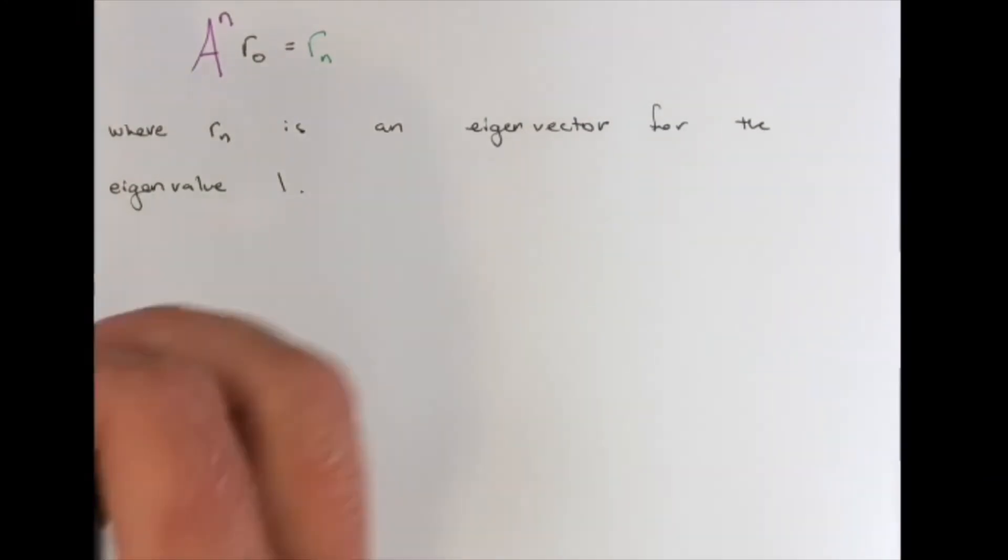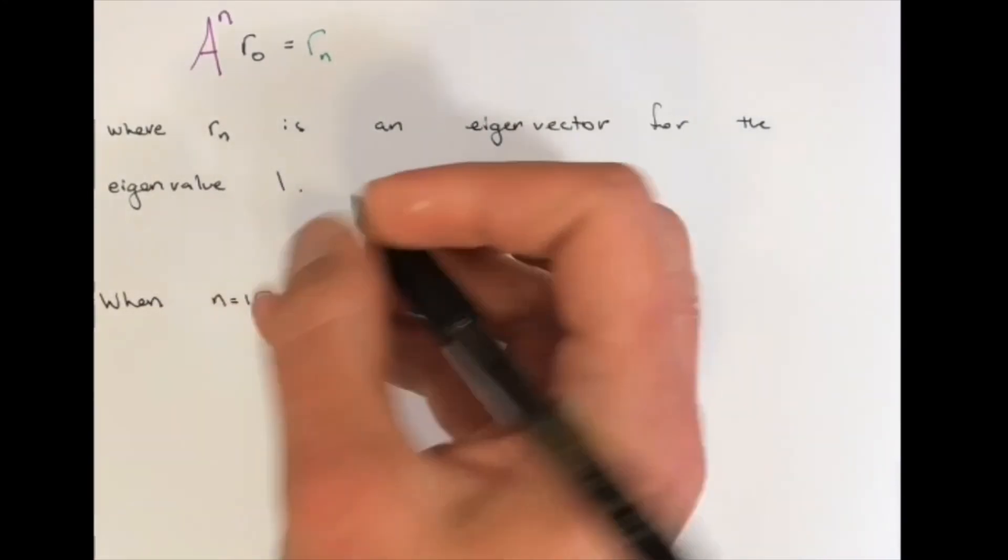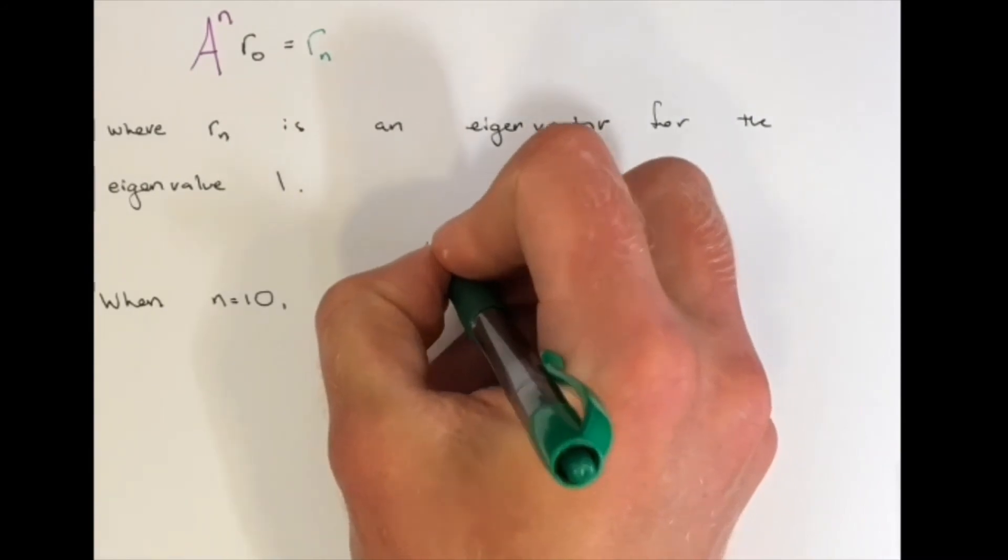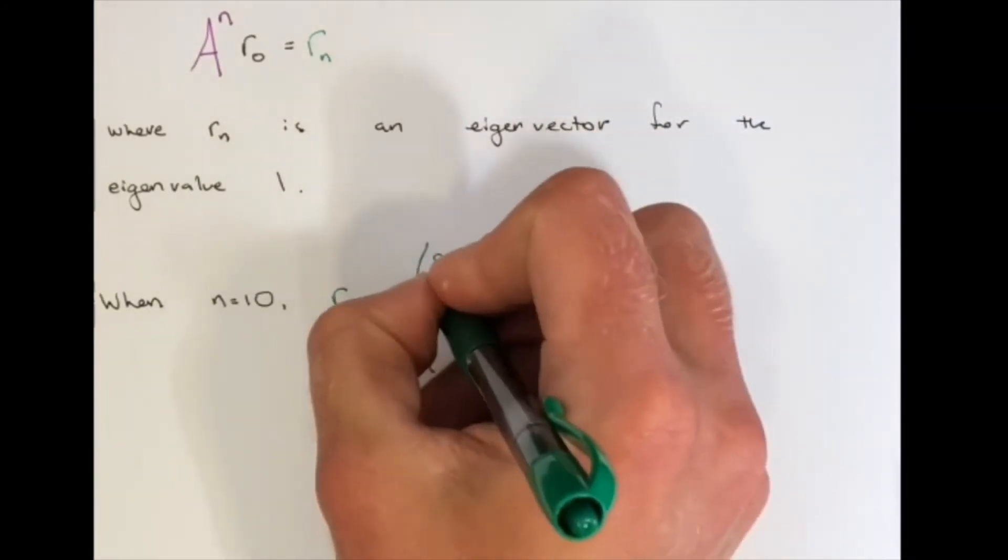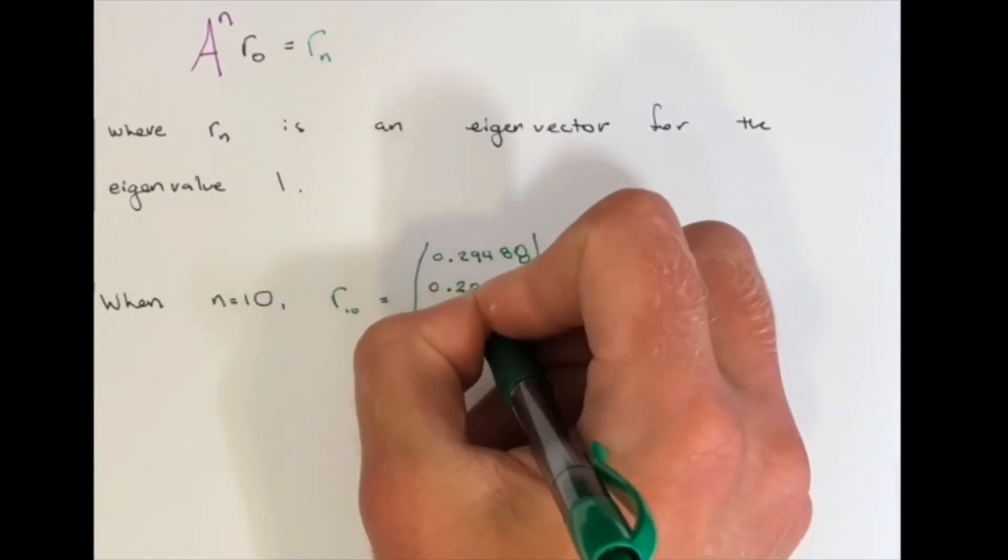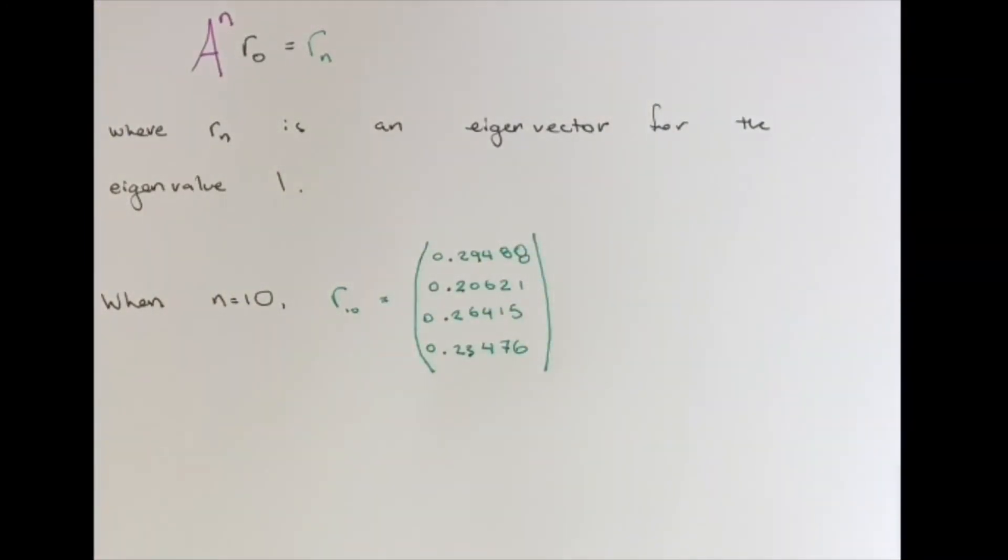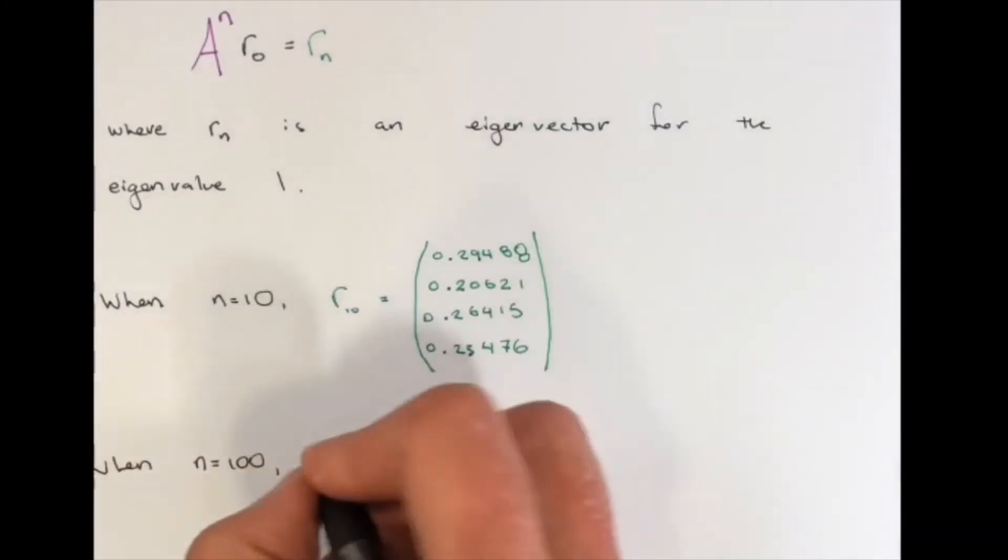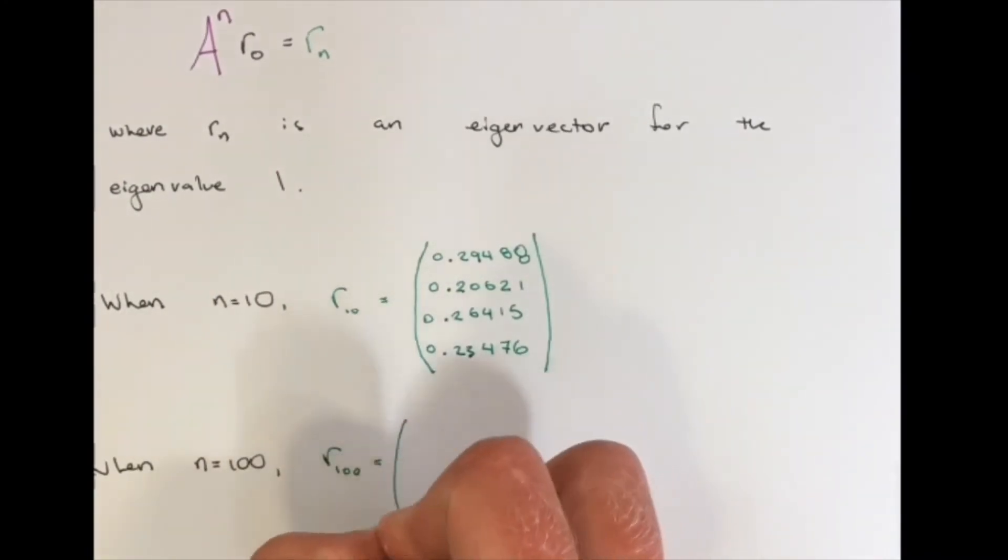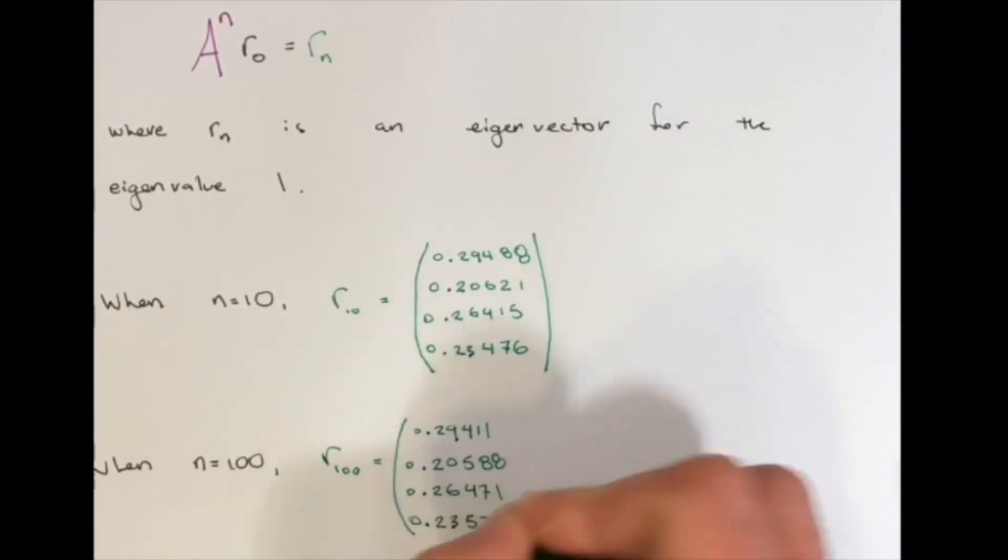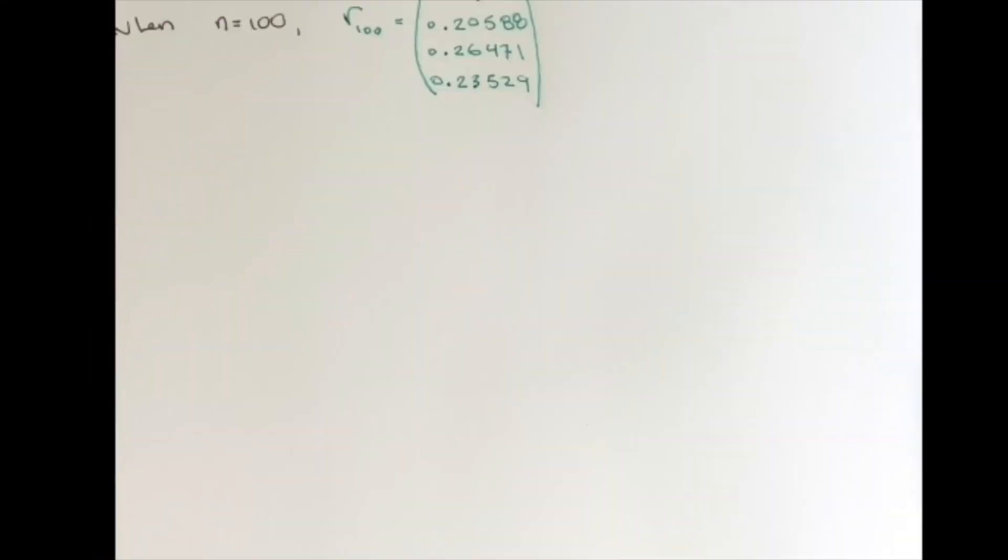So now we could use a computer to calculate large values of n to find out when the decimal stops fluctuating. So here we see the value of R when n equals 10, and here we see the value of R when n equals 100.